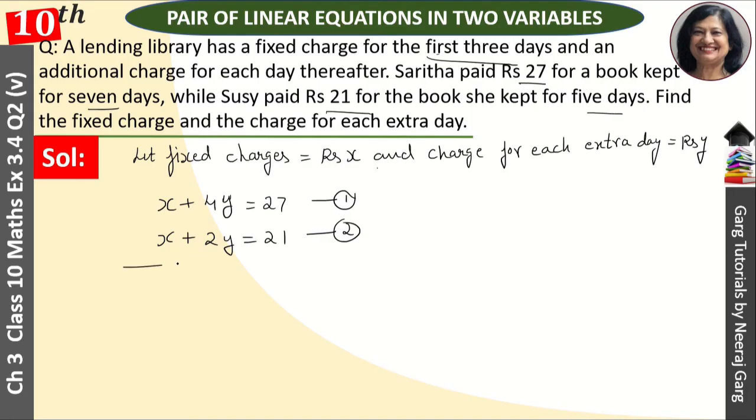Now we have to solve the equation. We subtract the equations directly. X will eliminate, and 4Y minus 2Y, we have 2Y is equal to 6, then Y is equal to 3.